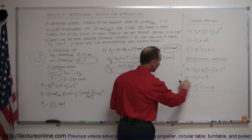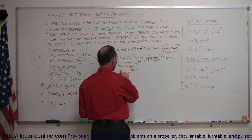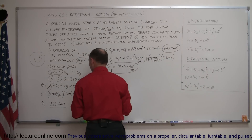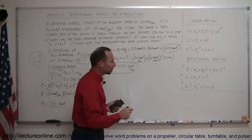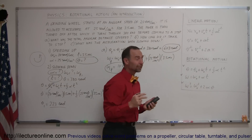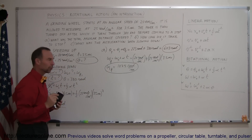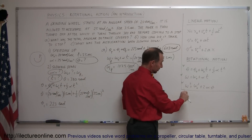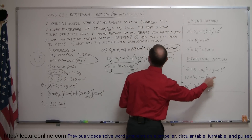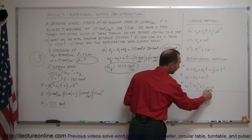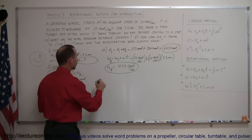Looking at the equation omega-final squared equals omega-initial squared plus 2 alpha theta, we know omega-final is zero (stopped), omega-initial is 107.5 radians per second, and theta is 380 radians, so alpha is the unknown. We can't use the simpler equation because we don't know either the time or the acceleration. So let's use the third equation and do part C first, since it's easier.